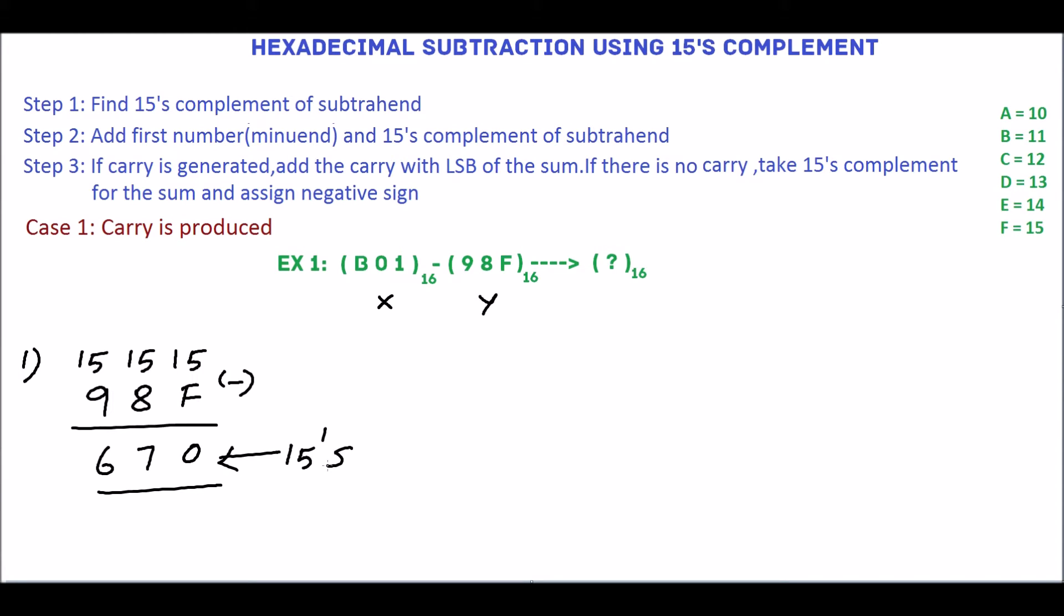In step 2, add x and 15's complement of y which is 6-7-0. Add this: 1 plus 0 is 1, 0 plus 7 is 7. B is equivalent of 11. 11 plus 6 is 17.